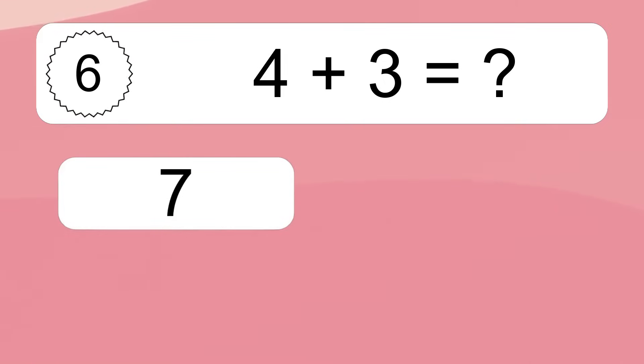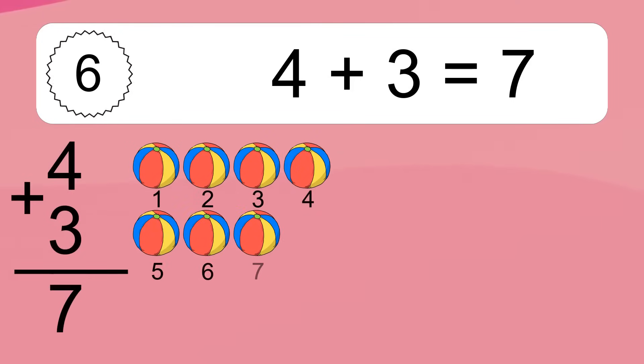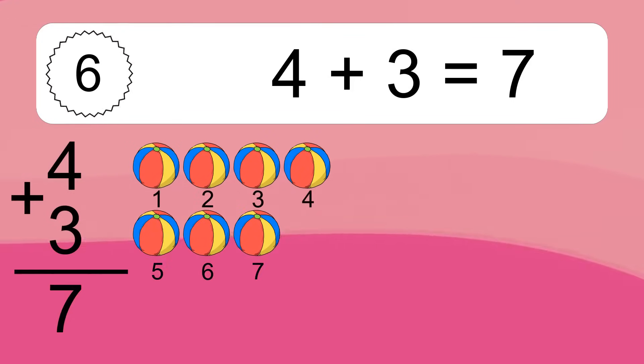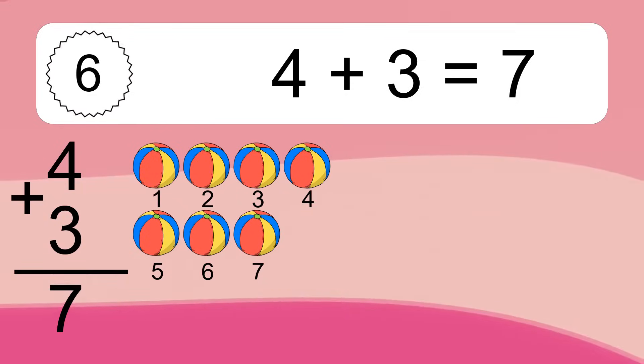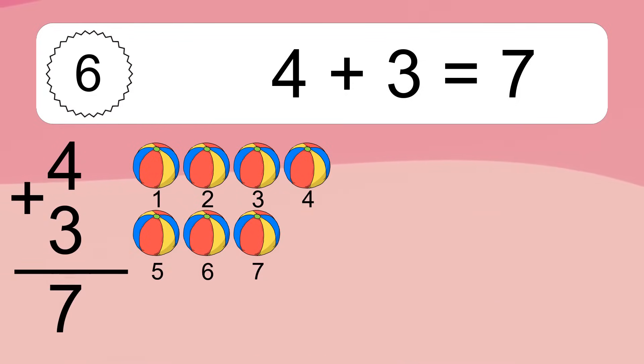4 plus 3 equals what? 4 plus 3 equals 7. Let's count it: 1, 2, 3, 4, 5, 6, 7.